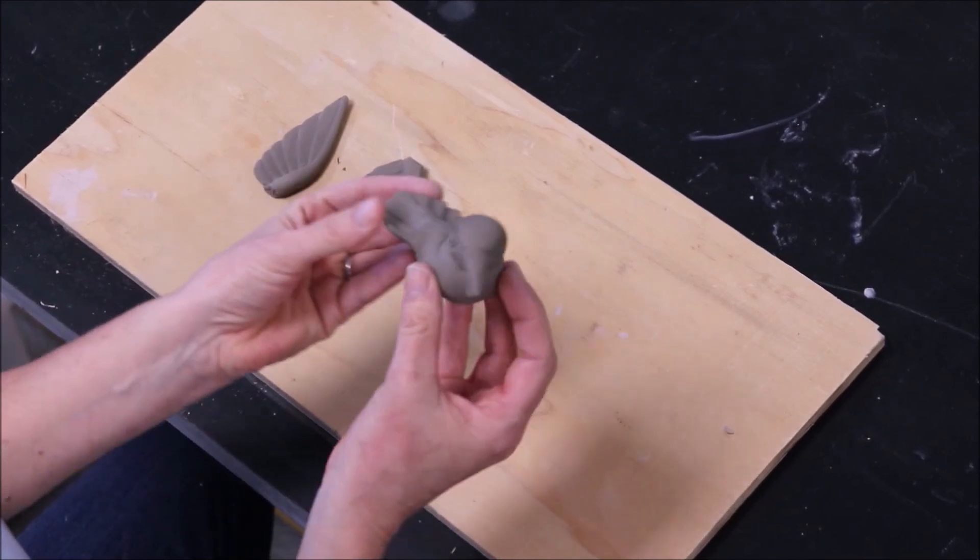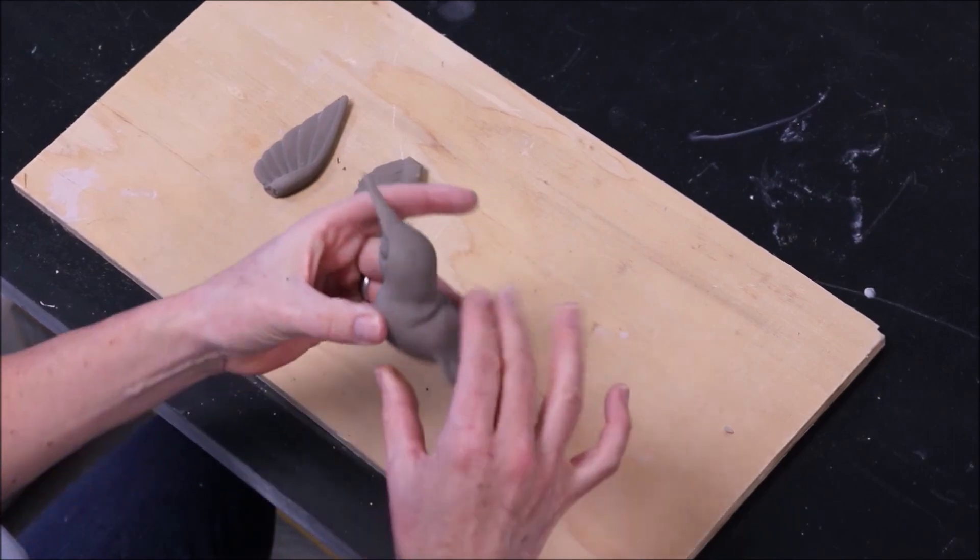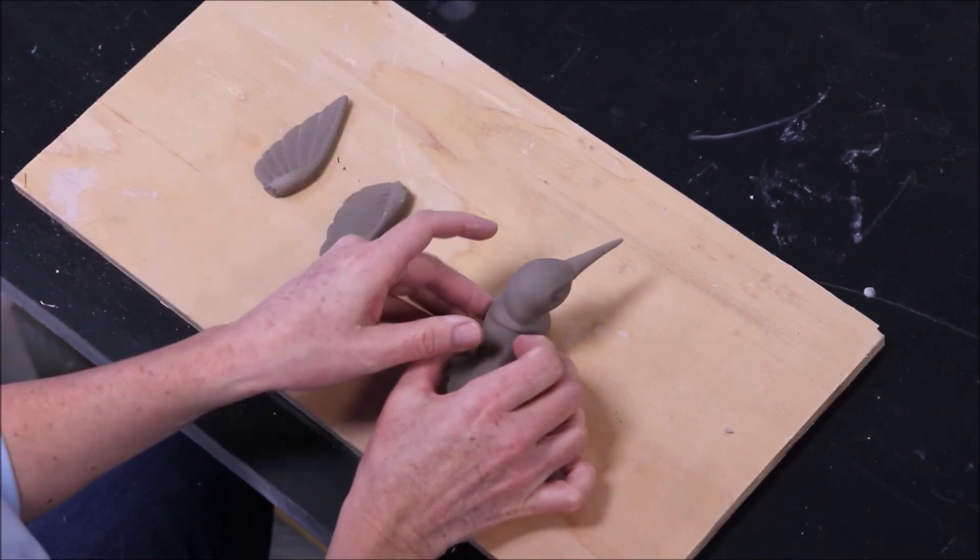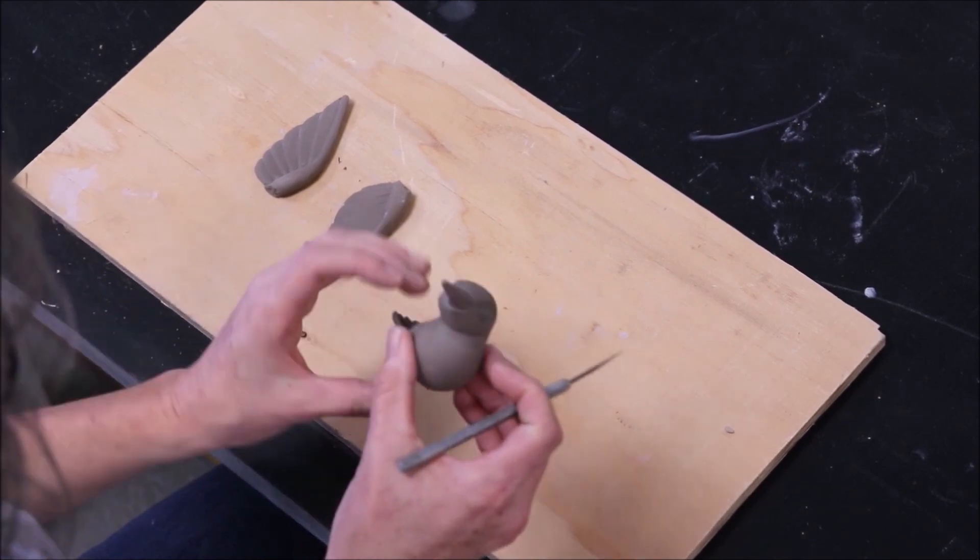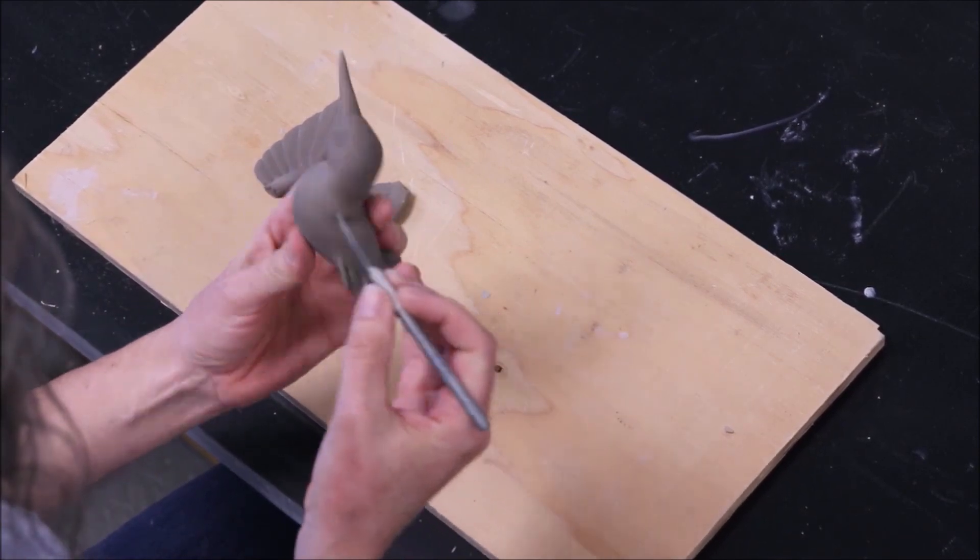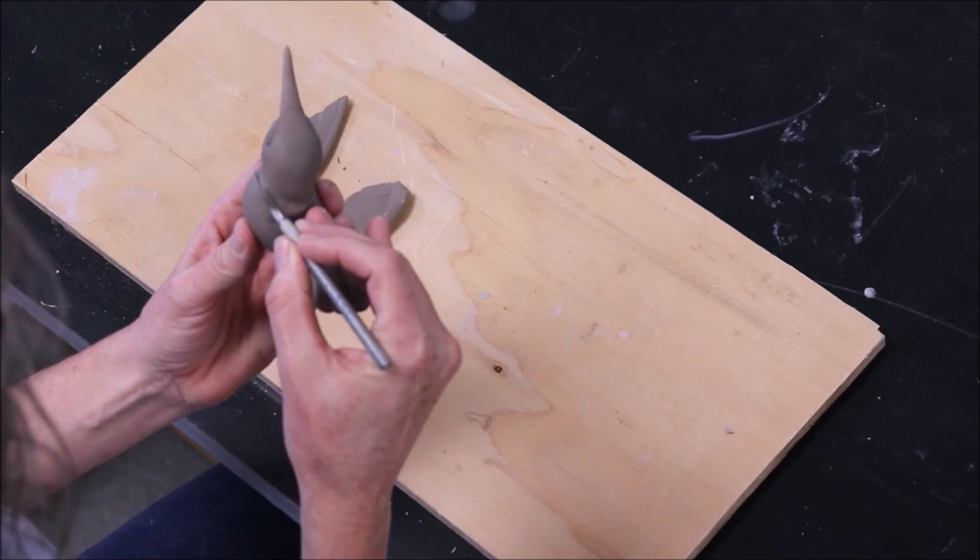If I wanted to, I could keep the head on this and it would still be a two-part mold. But if I did, the seam would end up going through the eyeballs, which would mean difficult and time-consuming cleanup. So it's often easier just to take the head off.